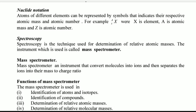Mass spectrometer is an instrument that converts molecules into ions and then separates the ions into their mass to charge ratio. Remember this definition.